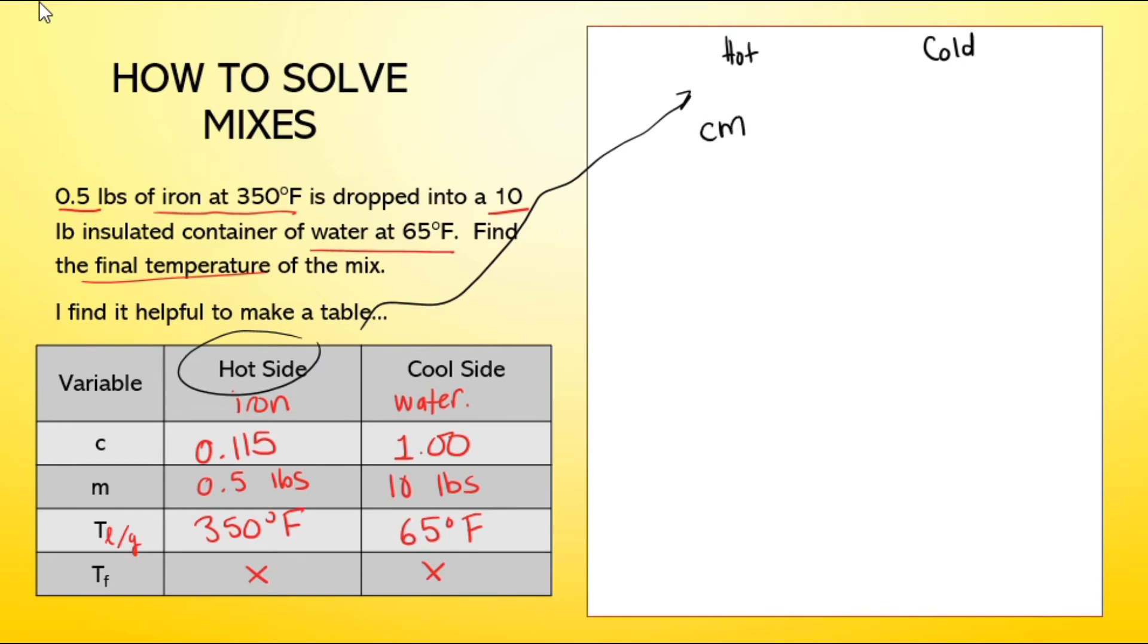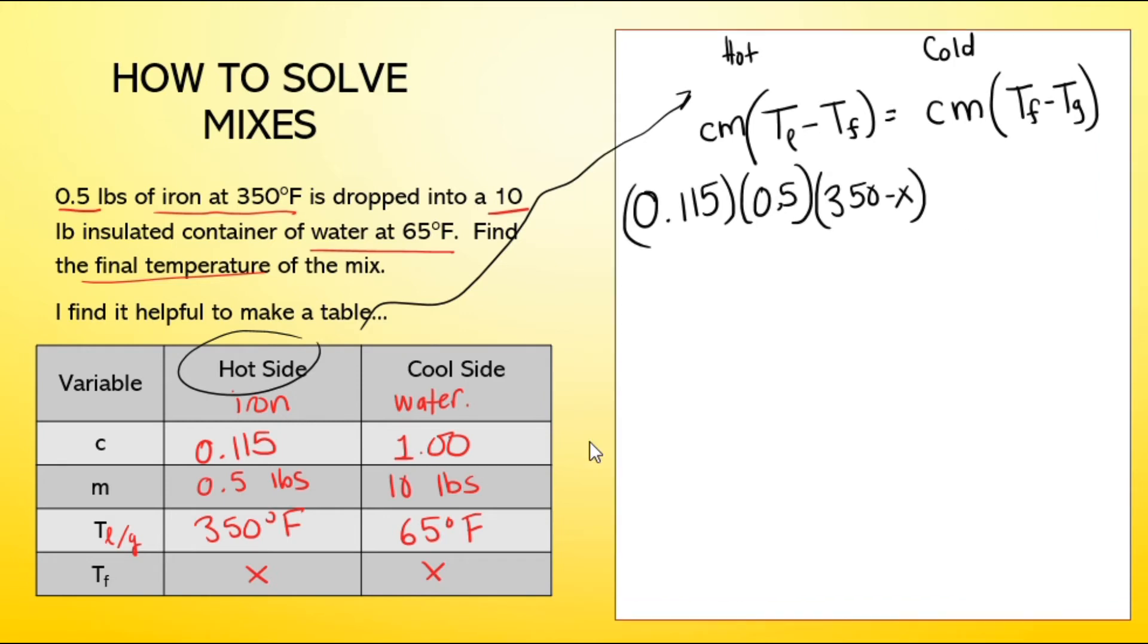So we know it's cm, temperature lost equals cm, temperature gained. All the information from iron goes on the left side. So the specific heat of iron, 0.115, the mass 0.5, the starting temperature TL in this case, 350 minus X. I'm going to just pause and move this over because I'm already running out of room.